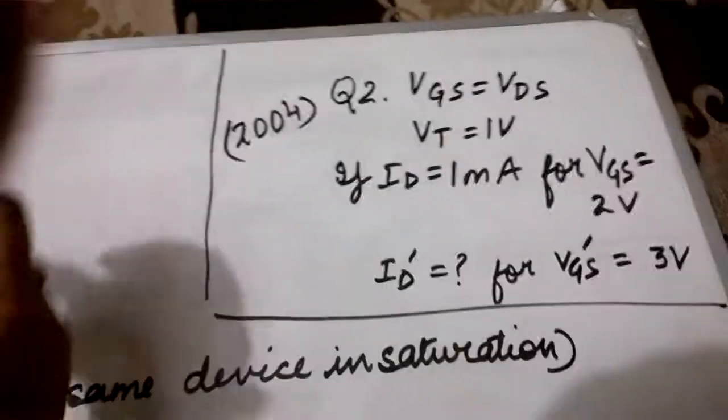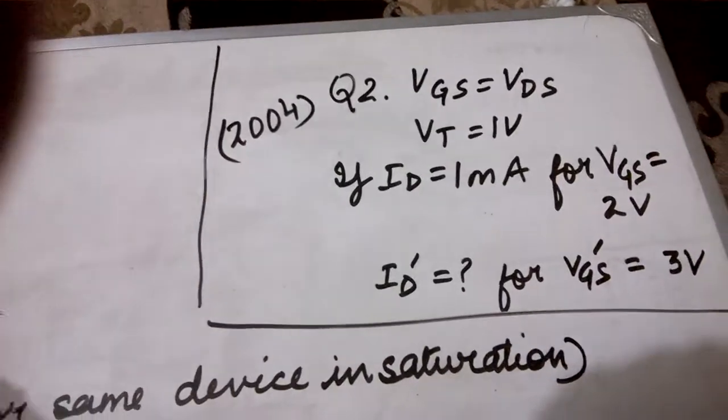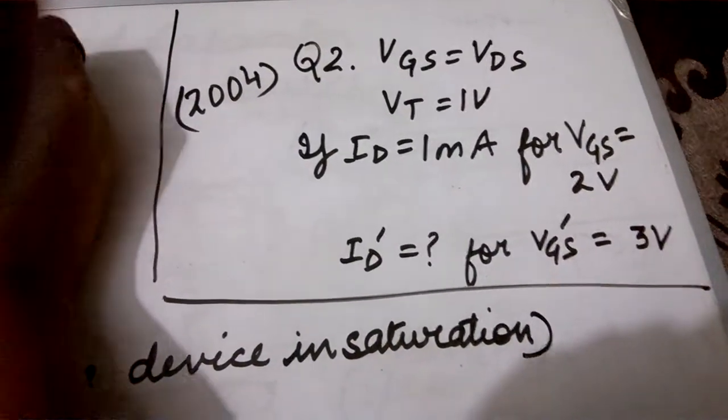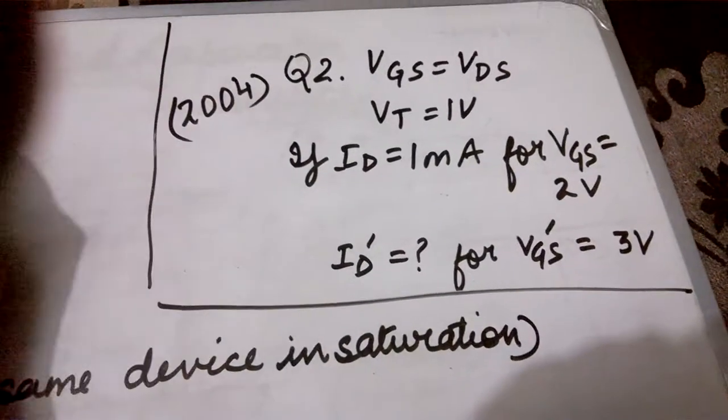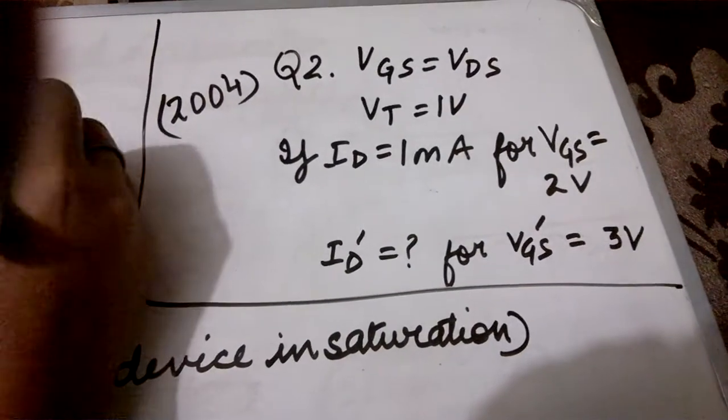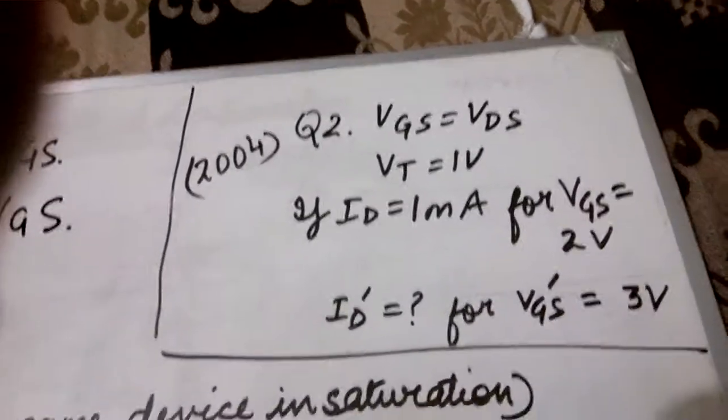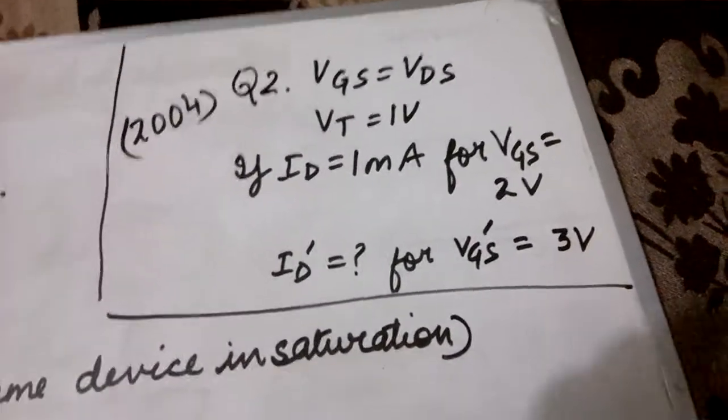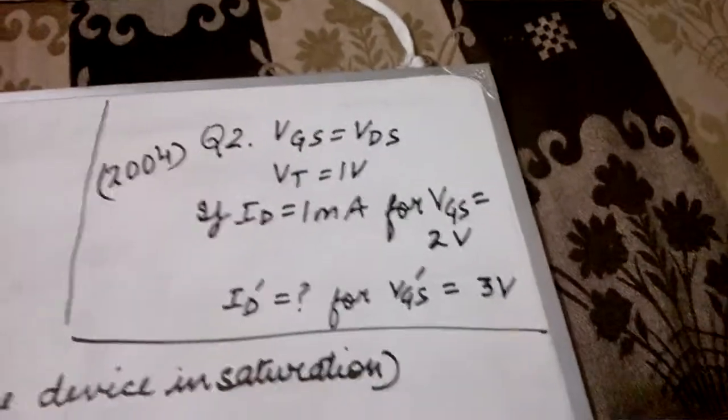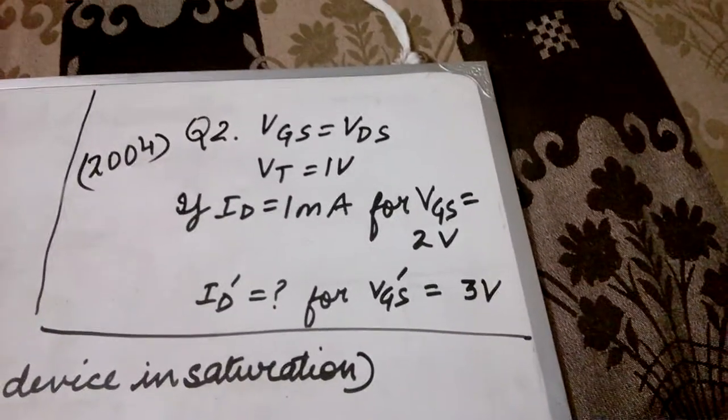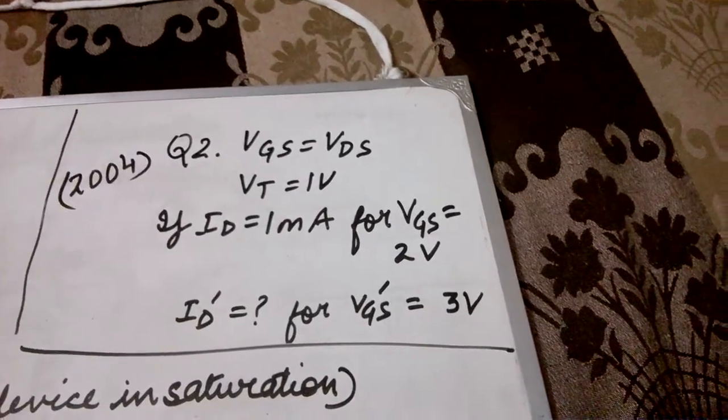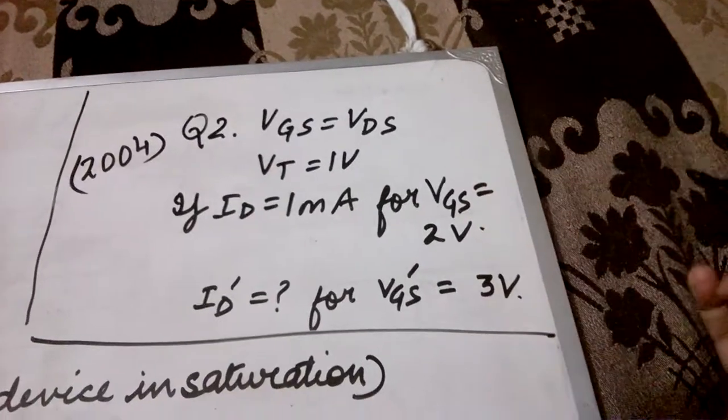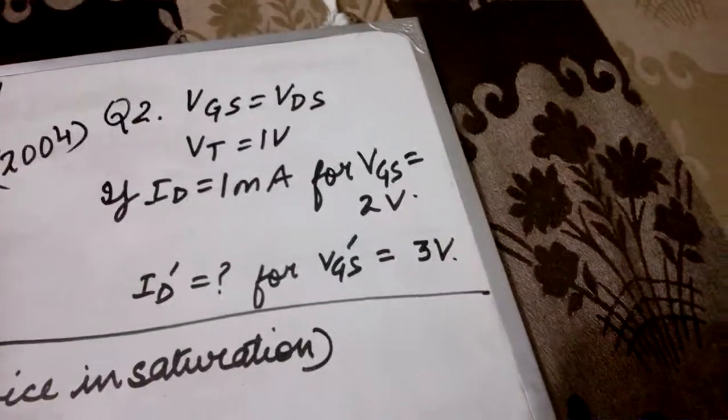First of all, let's observe how VT is related to Vgs and how it is related to Vds minus Vgs. We had two conditions: VT greater than Vgs then the device was in the cutoff region. Here we can compare with the first and second case. In both the cases, Vgs is always greater than VT. Here it is 2 volts, here it is 3 volts. 2 and 3 both are greater than 1 volt, so the device is not in the cutoff region.